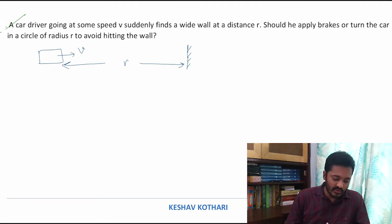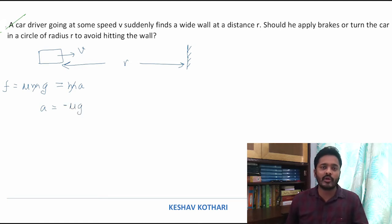If m is the mass of the car, friction is acting on it equal to μmg, which will produce a retardation. So the value of acceleration is -μg because the friction force will oppose the relative motion.